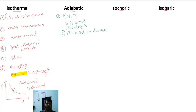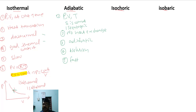In an adiabatic process, the walls of the container should be adiabatic — not diathermic — and the system should be thermally isolated. The process should also be fast. The equation of state for an adiabatic process is PV raised to gamma equals a constant.